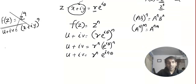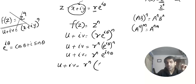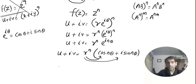Now, what is e^(iθ)? It is cis θ, or cos θ + i sin θ. So our function reduces to r^n · (cos nθ + i sin nθ).